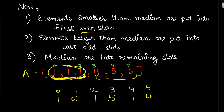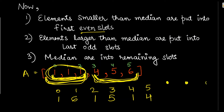Why do we need this? Because we have all smaller elements on one side and all larger elements on the other. For waveform, we need all the smaller elements on either even index or odd index. When we fill even indices with elements smaller than the median and odd indices with larger elements, we can have a proper wave.